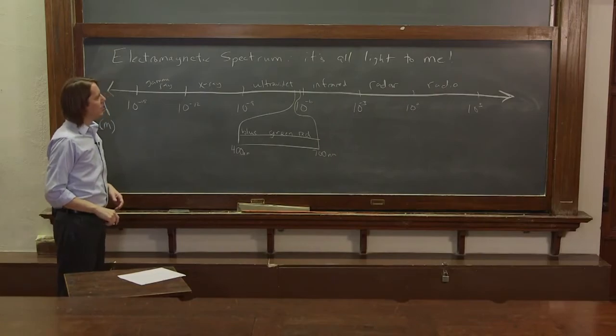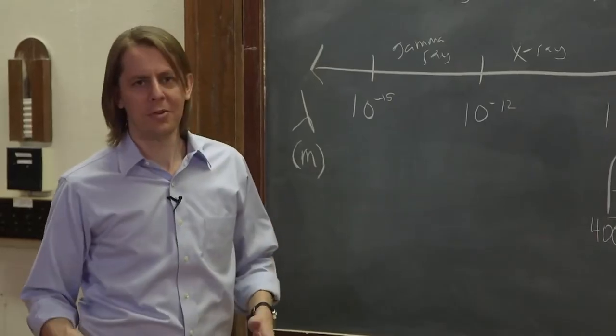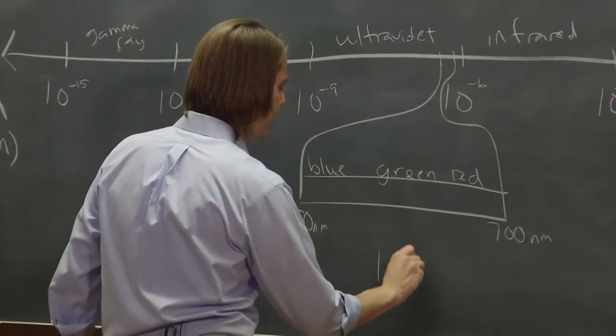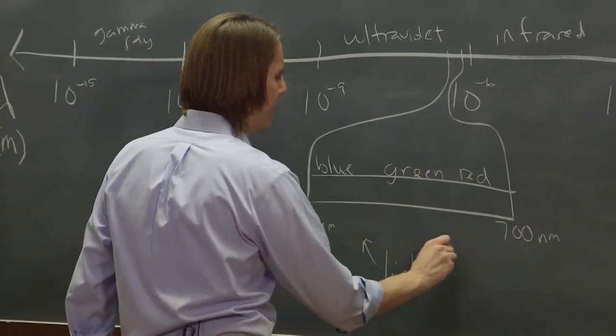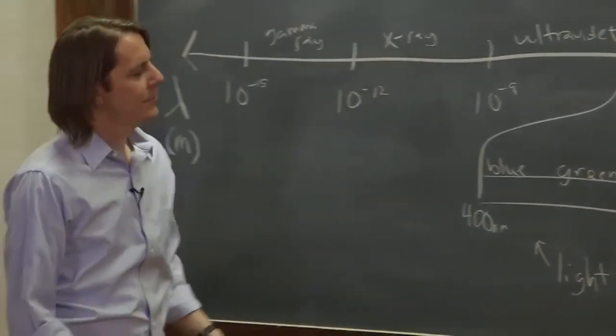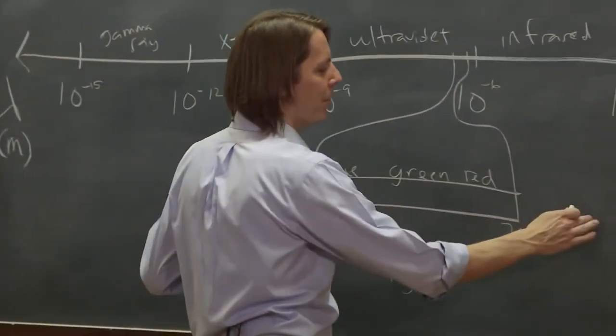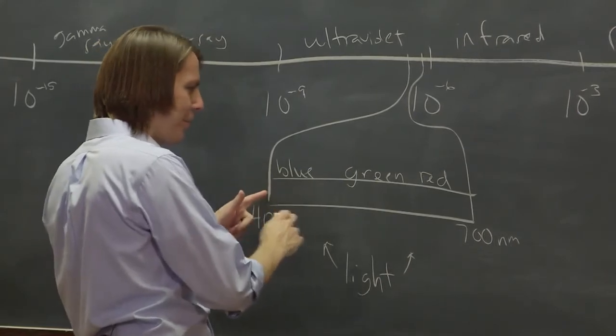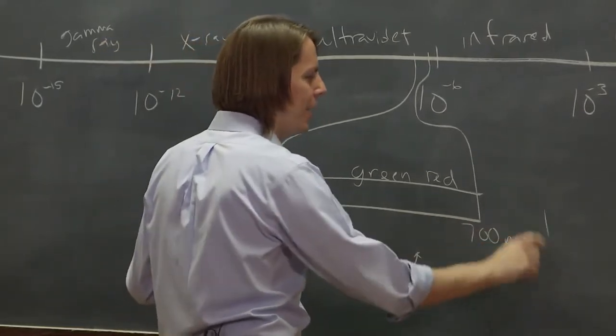So the question is, what is light, right? So light depends on who you are. Most people would just call this light, the stuff that your eye can see. Sometimes the definition of light gets stretched a little bit to a micron because silicon sensors can detect almost exactly the same, 400, a little bit further out to a micron.